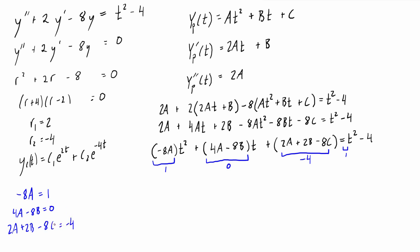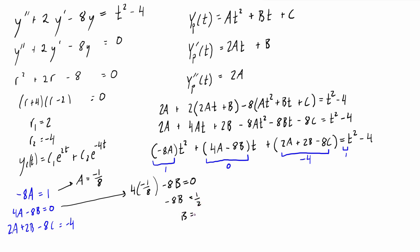We have three equations and three unknowns, which are pretty easy to solve by substitution. From the first equation, A = −1/8. Plugging A into the second equation: 4(−1/8) − 8B = 0, which gives −8B = 1/2, and therefore B = −1/16.